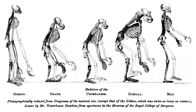Organisms which share a more recent common ancestor are more closely related. The most recent common ancestor of all currently living organisms is the last universal ancestor, which lived about 3.9 billion years ago. The two earliest evidences for life on Earth are graphite found to be biogenic in 3.7 billion year-old metasedimentary rocks discovered in western Greenland, and microbial mat fossils found in 3.48 billion year-old sandstone discovered in western Australia.